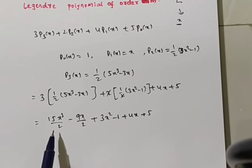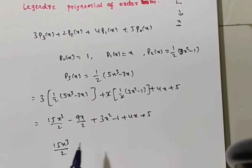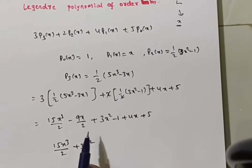Now you have to simplify this. Here you see highest degree polynomial is x³, so this is 15x³/2. Next x² terms, plus 3x².